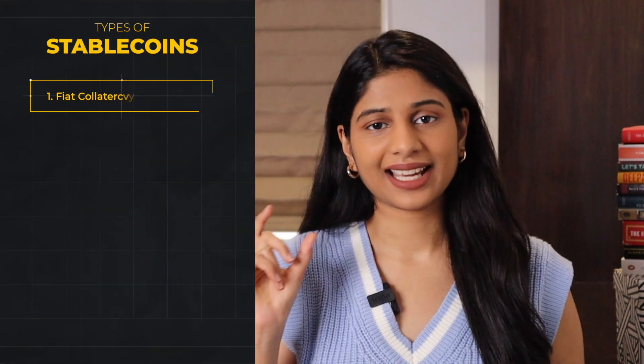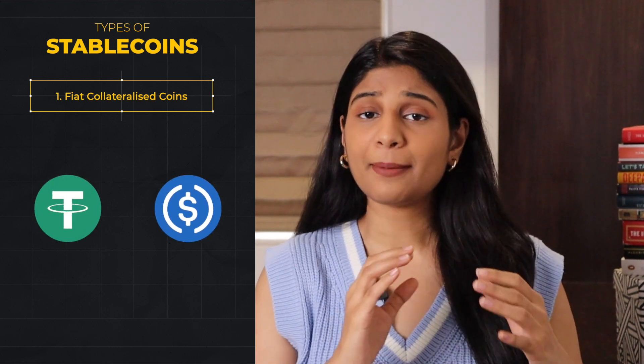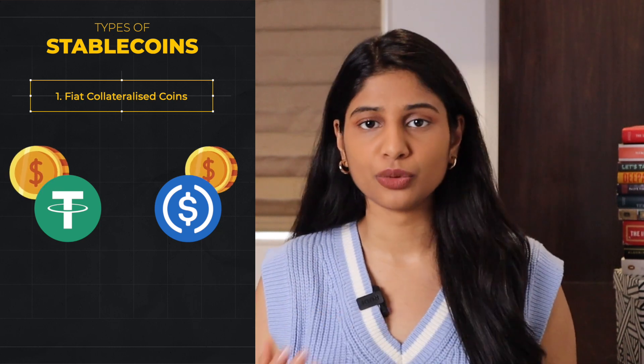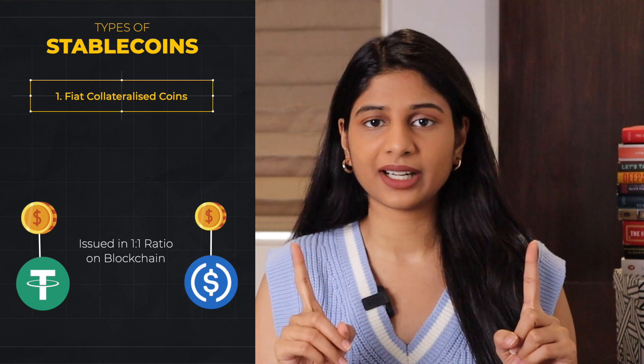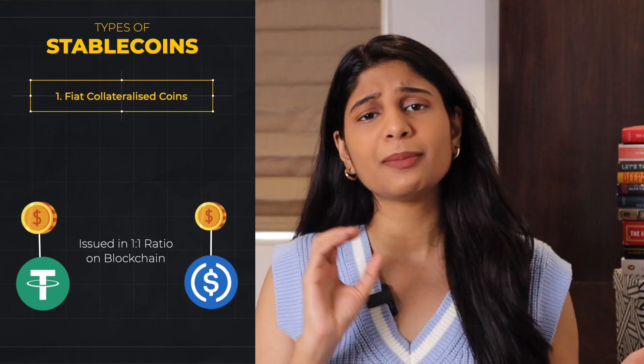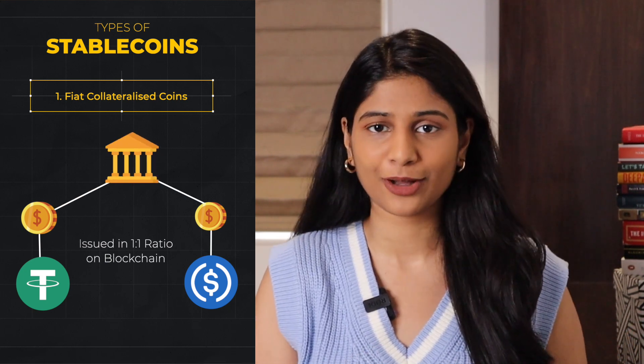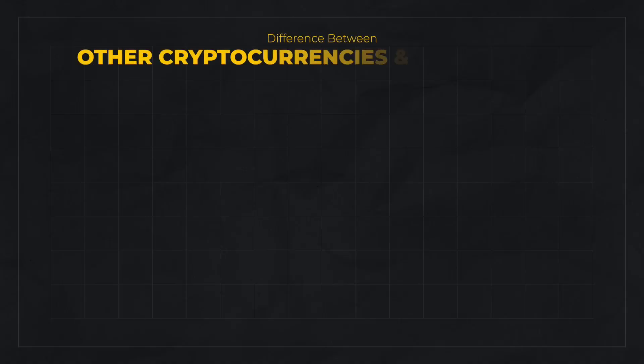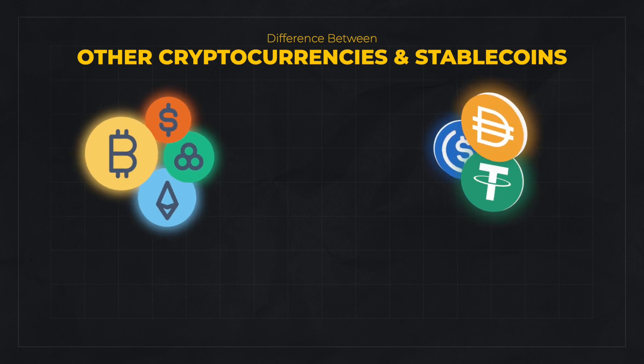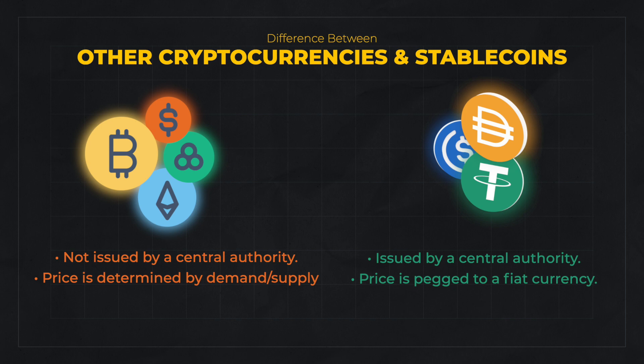The first type is fiat-collateralized stablecoins. These are the most popular stablecoins, backed by a fiat currency such as the US dollar or euro, usually in a one-to-one ratio. So for a US dollar-pegged stablecoin, there will be one US dollar in the bank account of the issuer. These stablecoins are issued on a blockchain, but unlike other cryptocurrencies, they are issued by a central authority and their price is pegged to a fiat currency rather than determined by supply and demand. USDC and USDT are two such stablecoins, both pegged to the US dollar with cash and cash equivalents like treasury bills held in reserve.